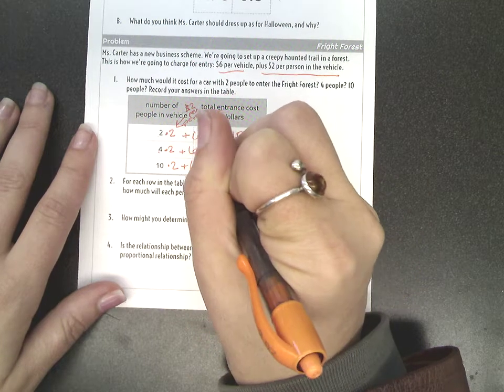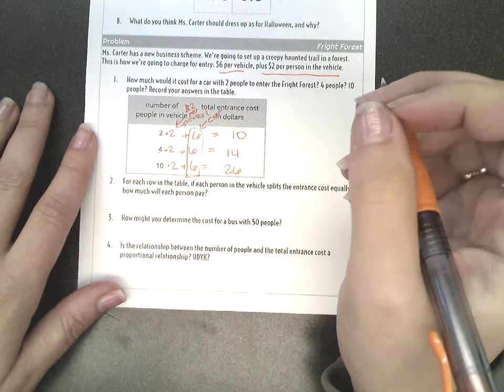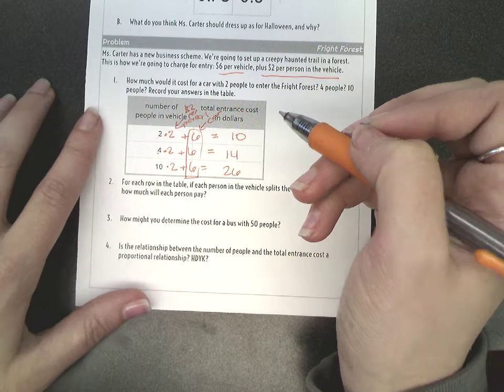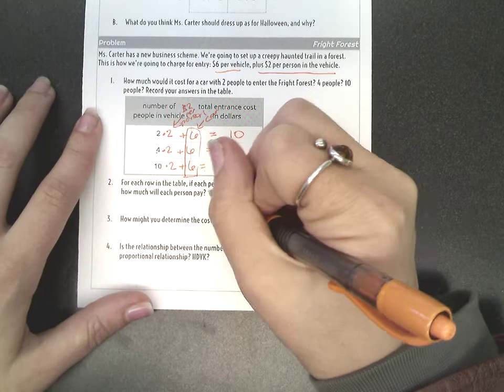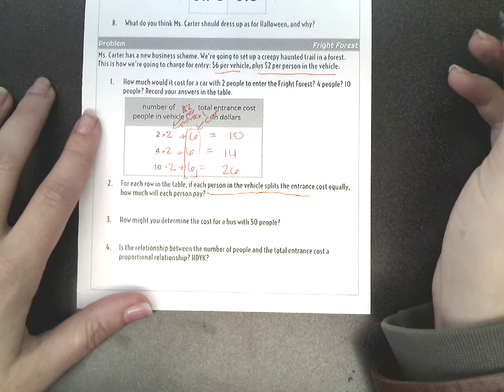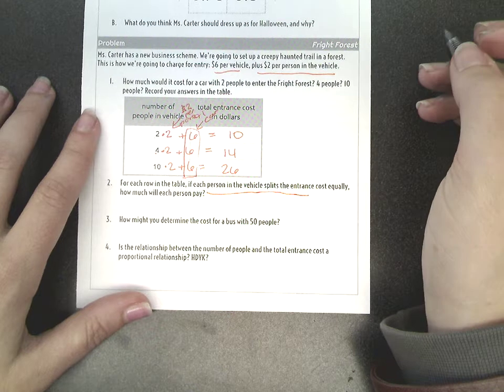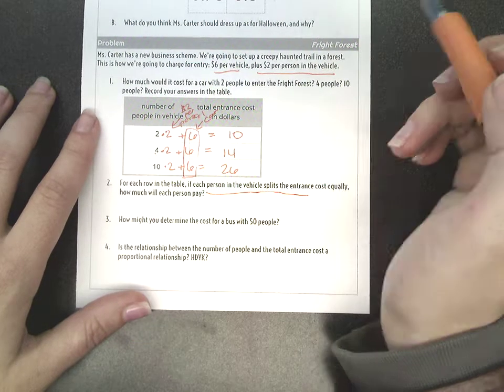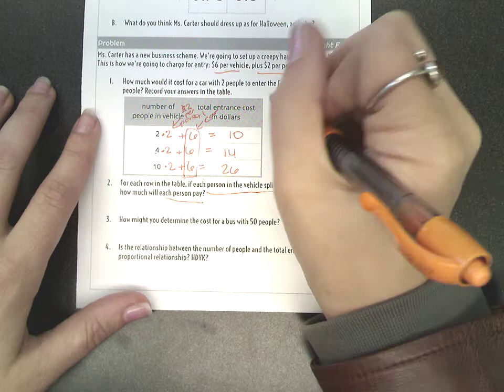So the thing to notice is that we are only paying that $6 the one time because there's only one car that everyone is in. So the next question is, if we split the cost equally, if it is a fair deal, and we say both of you have to pay the same amount, or all four of you, or all 10 of you have to pay the same amount, what is going to be the price per person?